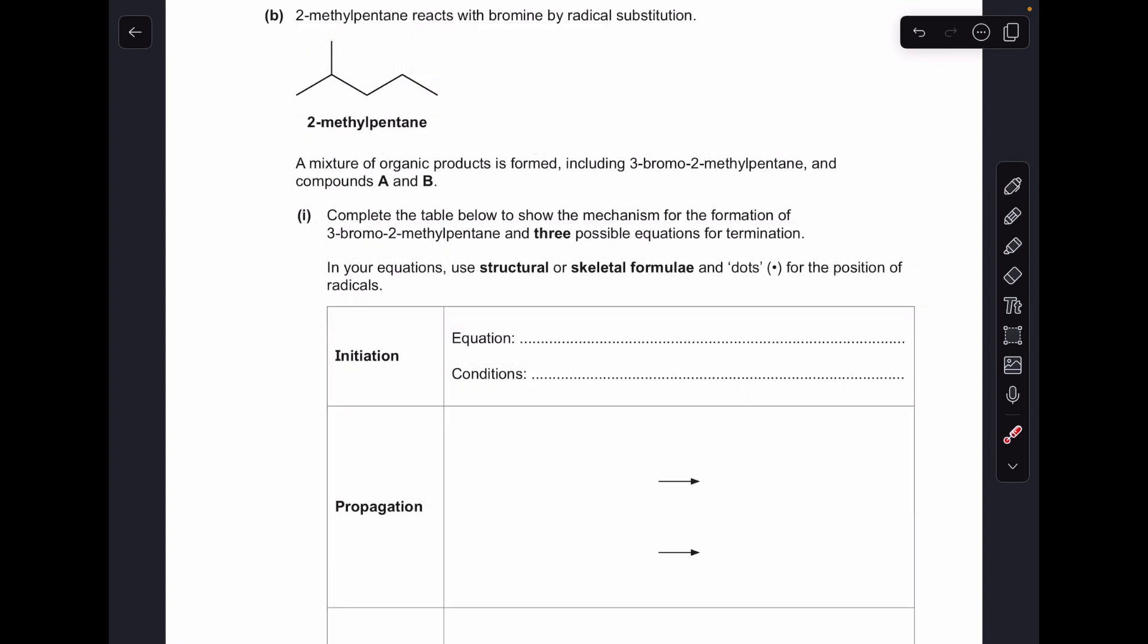Moving on to part B, which deals with the mechanism. So we're told 2-methylpentane reacts with bromine by radical substitution and the mechanism is focusing on this particular product here, 3-bromo-2-methylpentane. So we've got to come up with the initiation, propagation and termination reactions.